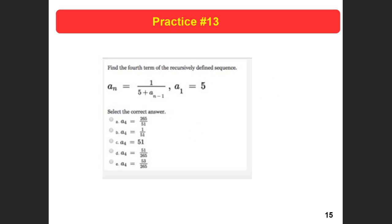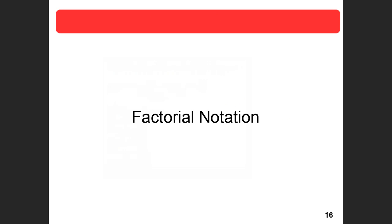Find the fourth term of the recursively defined sequence. The first term is 5, so I need the second, third, and fourth. The formula gives 1 over the quantity (previous term plus 5), so that's going to get nasty quickly — the second term is already 1/10. You'd need to substitute 1/10 into the formula to get the next term, and so on. I'll let you finish that one.